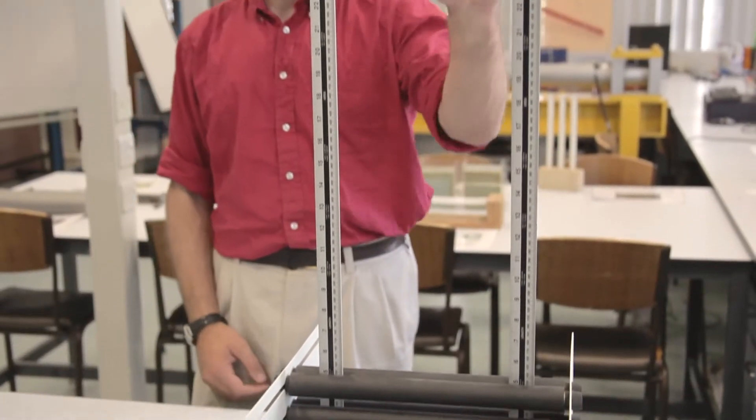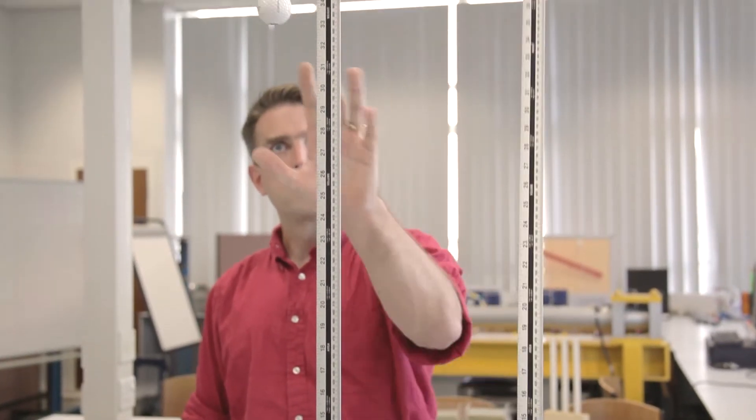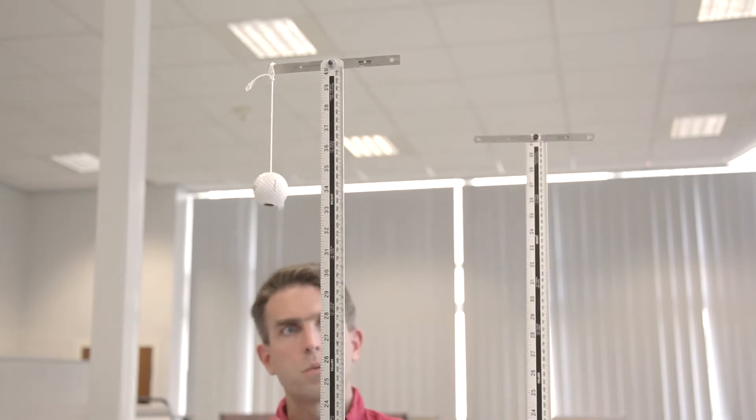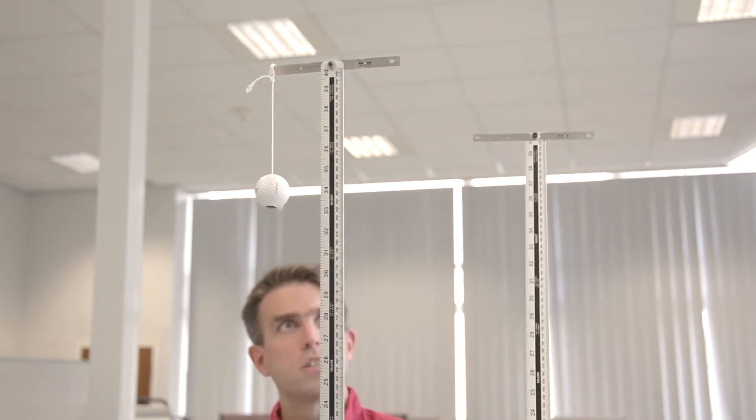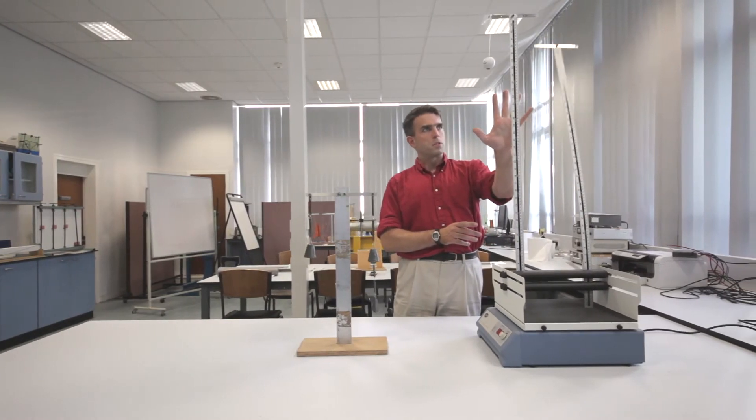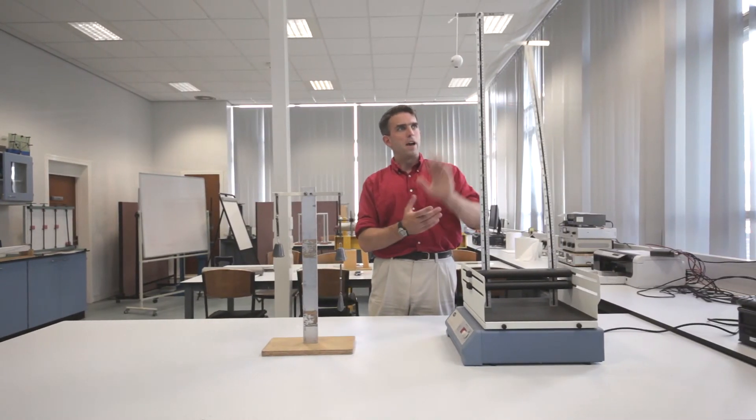And as you can see, the one without the mass damper is shaking pretty wildly, whereas the one with the mass damper is not really shaking at all. And so if these were full-scale structures in an earthquake, this one would be shaking itself to bits. The people in this one would maybe feel slightly seasick but everything would be safe.